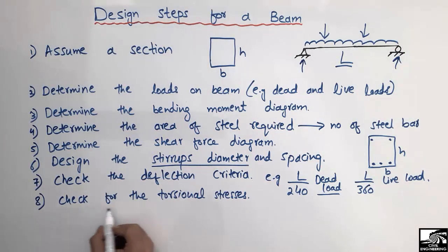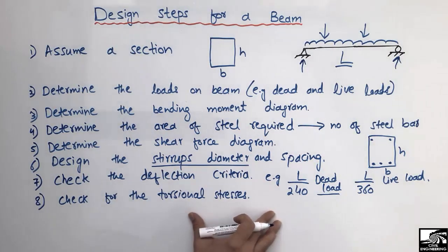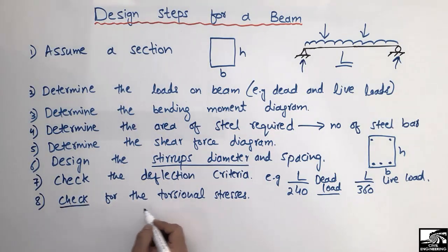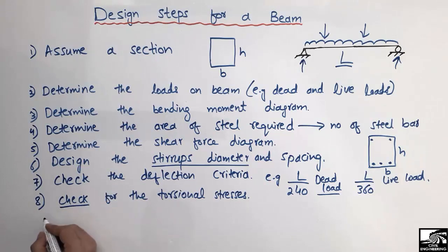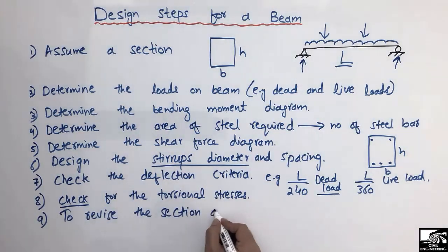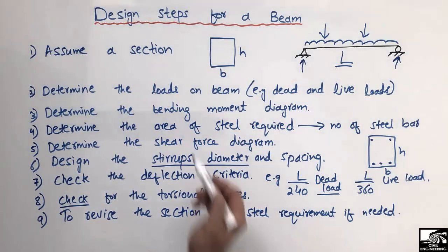The eighth step is to check for torsion stresses. There are stresses created along the length of the beam called torsion stresses. We should check that the beam does not exceed the torsion stress limits recommended by different codes.